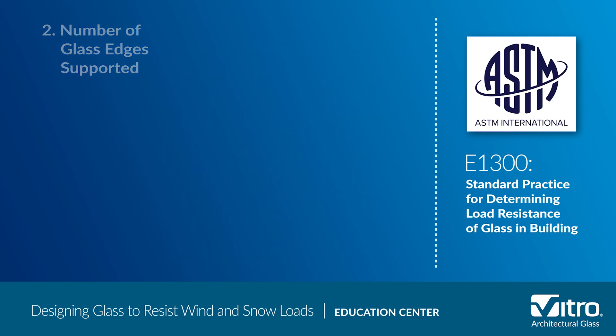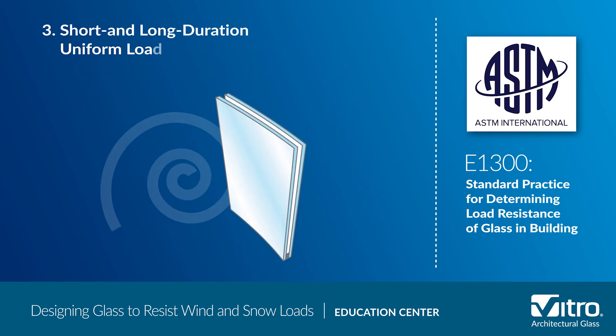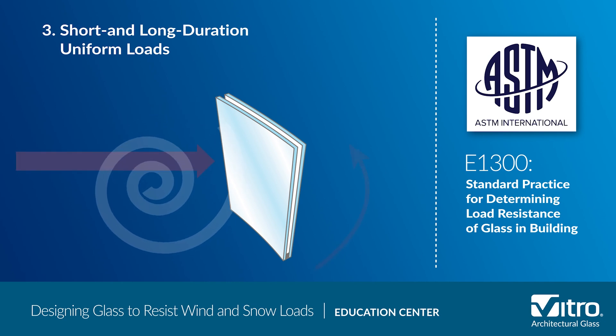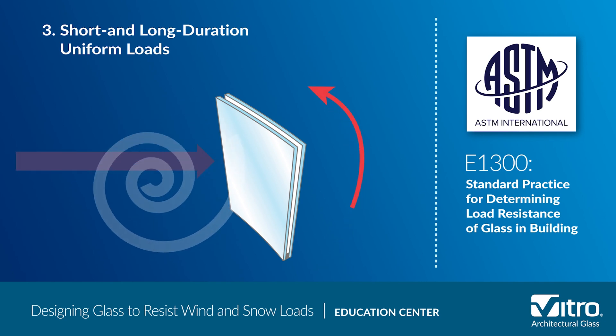Third, short and long duration uniform loads. A wind gust against a building facade is the most common example of a short duration load, while snow on top of a skylight is an example of a long duration load.